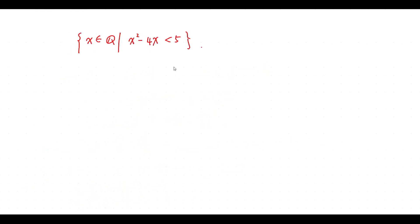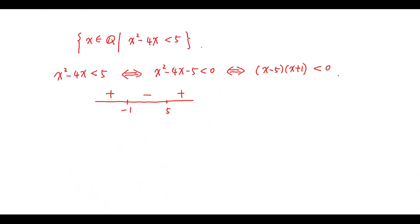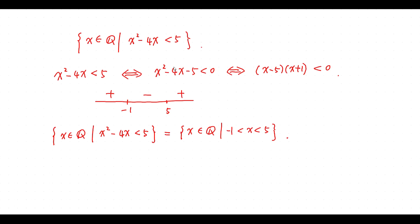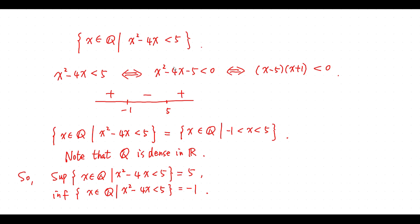Consider this set. We see that this inequality is equivalent to this inequality. The solution of this inequality is given by this interval. So, this set equals this one. Note that Q is dense in R. So, the supremum of this set equals 5 and the infimum of this set equals minus 1.